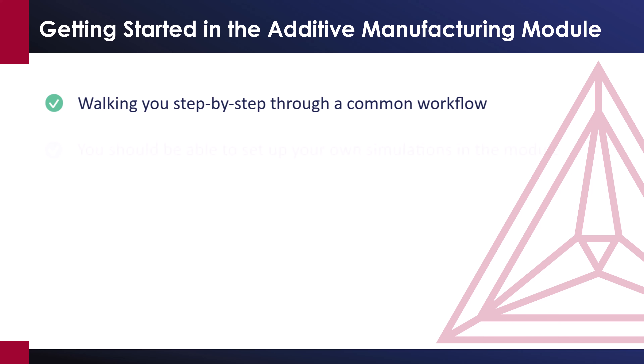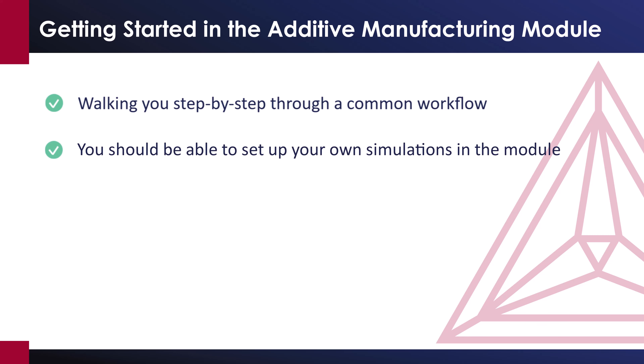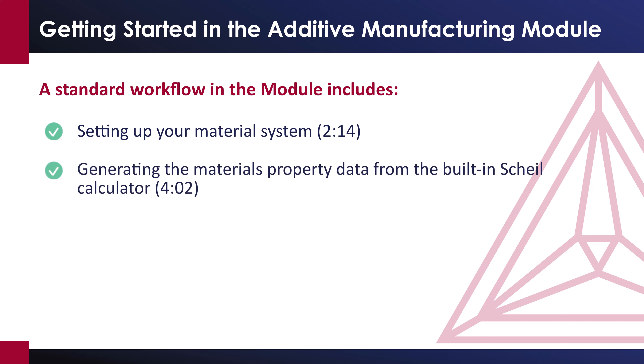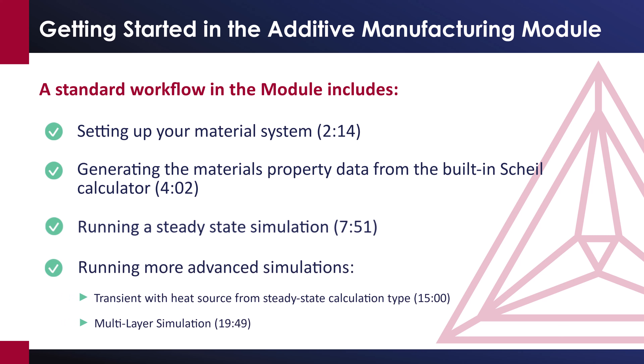By the end of this video, you should be able to set up your own simulations in the Additive Manufacturing module, also known as the AM module. A standard workflow in the module includes setting up your material system, generating the materials property data from the built-in Scheil calculator, running a steady-state simulation, which is the most basic simulation type, and will save you time by allowing you to test your setup before moving on to more complex, time-consuming simulations. And finally, running more advanced simulations, such as those listed on the screen. We will go through all of these steps in this video.